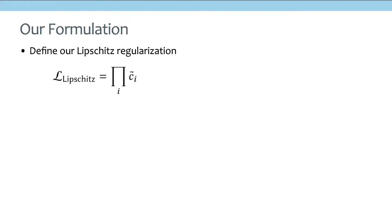There are many different possibilities to formulate such a Lipschitz regularization, and if you're interested in the comparison in detail, please visit the paper. But in this talk, we're going to just go straight to our conclusion, to our final formulation. In this work, we basically define the Lipschitz regularization as a product of something called C tilde. And this C tilde represents the Lipschitz constant of each layer of MLP.